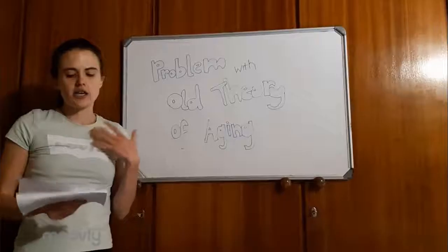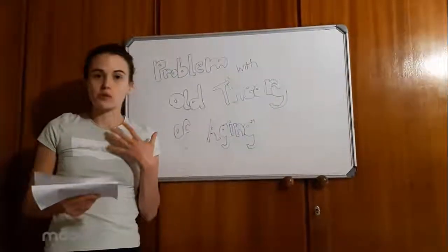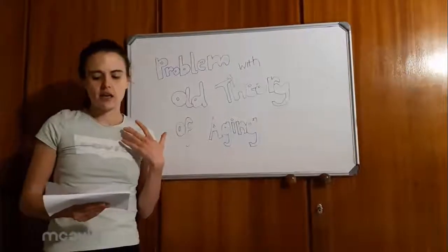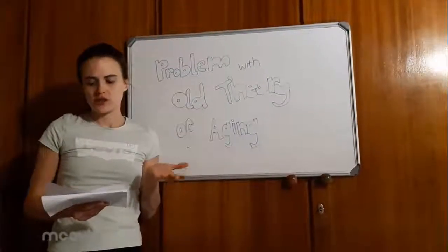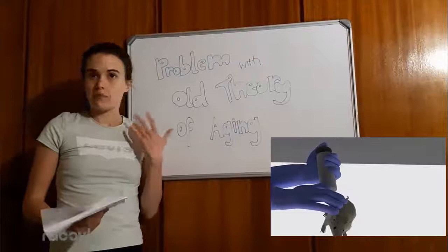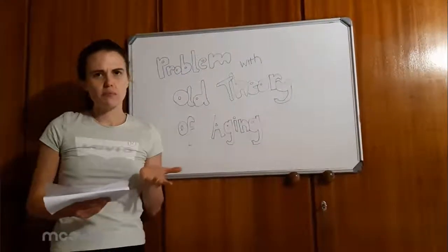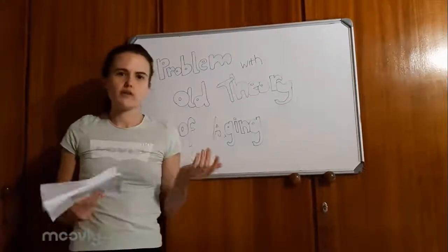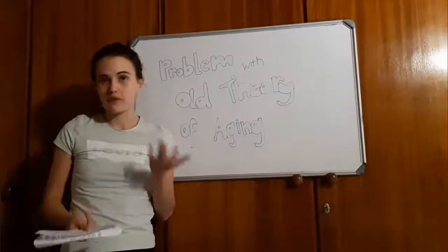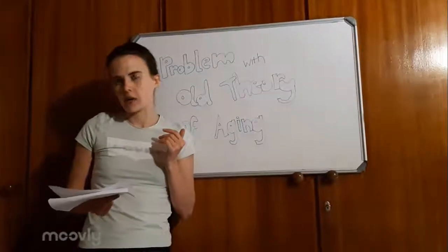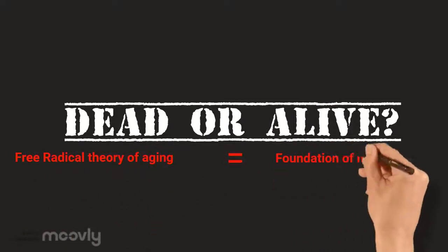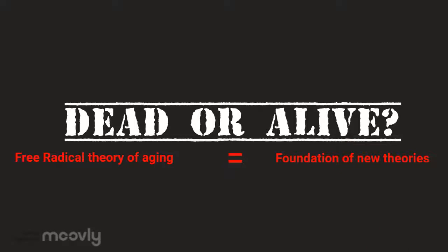Is this theory dead or alive? The problem with the old theory is that researchers continue to struggle to prove that one can extend lifespan by slowing down these mutations. Feeding antioxidants to mice and other organisms hasn't had a big impact on their lives. In fact, one of the new theories is that free radicals may be somewhat beneficial and can extend lifespan. Although more arguments suggest that the free radical theory of aging is not the key component in the aging process as it was once believed to be, it has formed the foundation of most of the new theories of aging being proposed today.